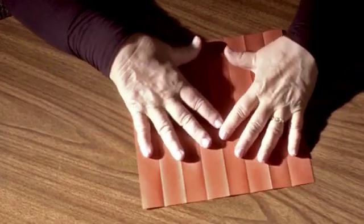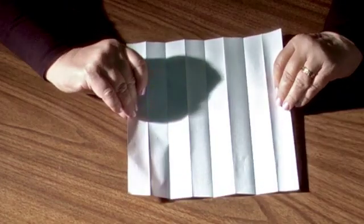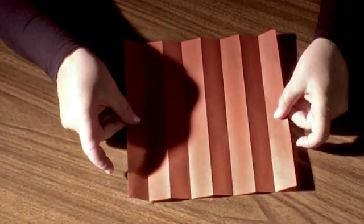We're going to start with a square of paper. This is just a regular sheet of origami paper, white on one side and tan on the other side.